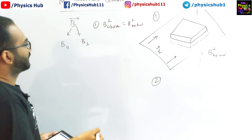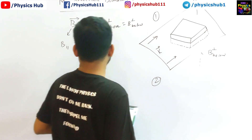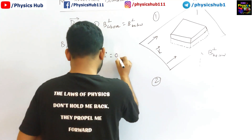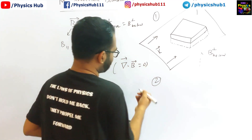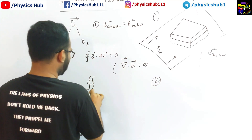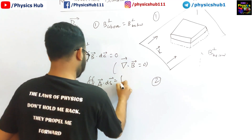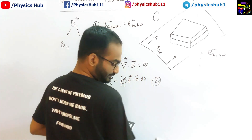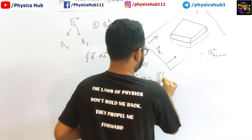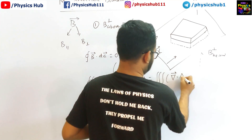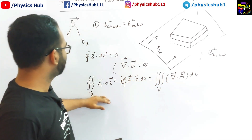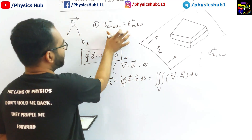This can be proved using the pill box. We know that the surface integral of B dot dA equals zero. Why? Because from Maxwell's second equation, the divergence of B equals zero. Using the divergence theorem: the surface integral of A dot dS equals the volume integral of divergence of A dV. Since divergence of B is zero, the surface integral of B dot dA is also zero.